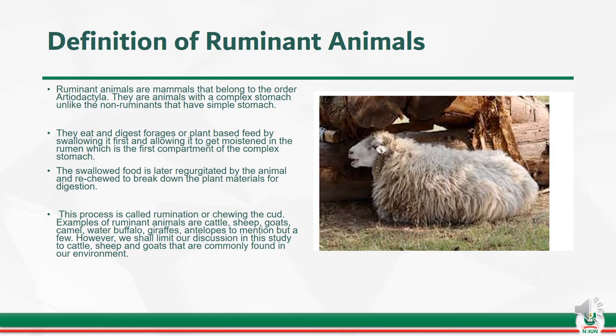The swallowed food is later regurgitated by the animal and rechewed to break down the plant materials for digestion. This process is called rumination, or chewing the cud. Examples of ruminant animals are cattle, sheep, goats, camel, water buffalo, giraffes, and antelopes, to mention but a few.